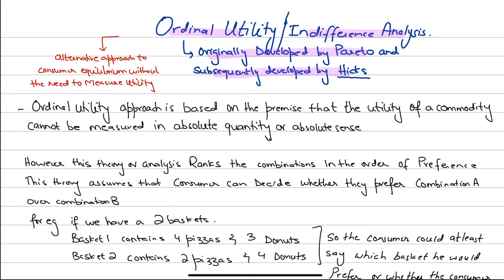By way of introduction: ordinal utility, or the indifference curve theory, is basically an alternative approach to consumer equilibrium. It is an alternative method or theory to consumer equilibrium without any need to measure utility in cardinal numbers.